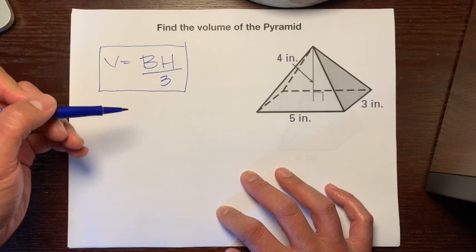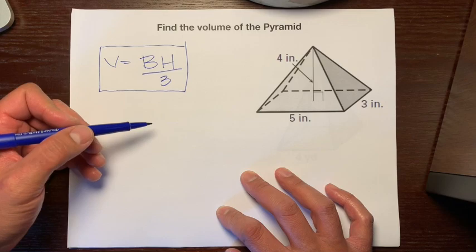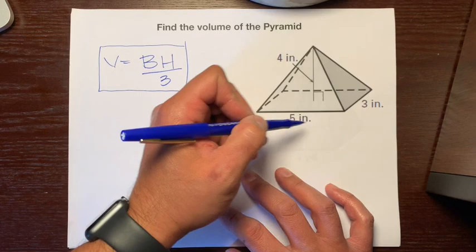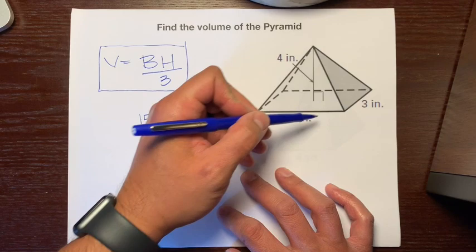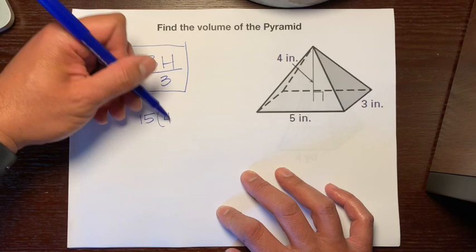So now let's just use this formula. It looks like this type of pyramid is a rectangular pyramid. So let's find the area of the base of this rectangle or this pyramid, which is a rectangle. So five times three is 15 and times the height, which is the distance from the base to the highest point, which is four.